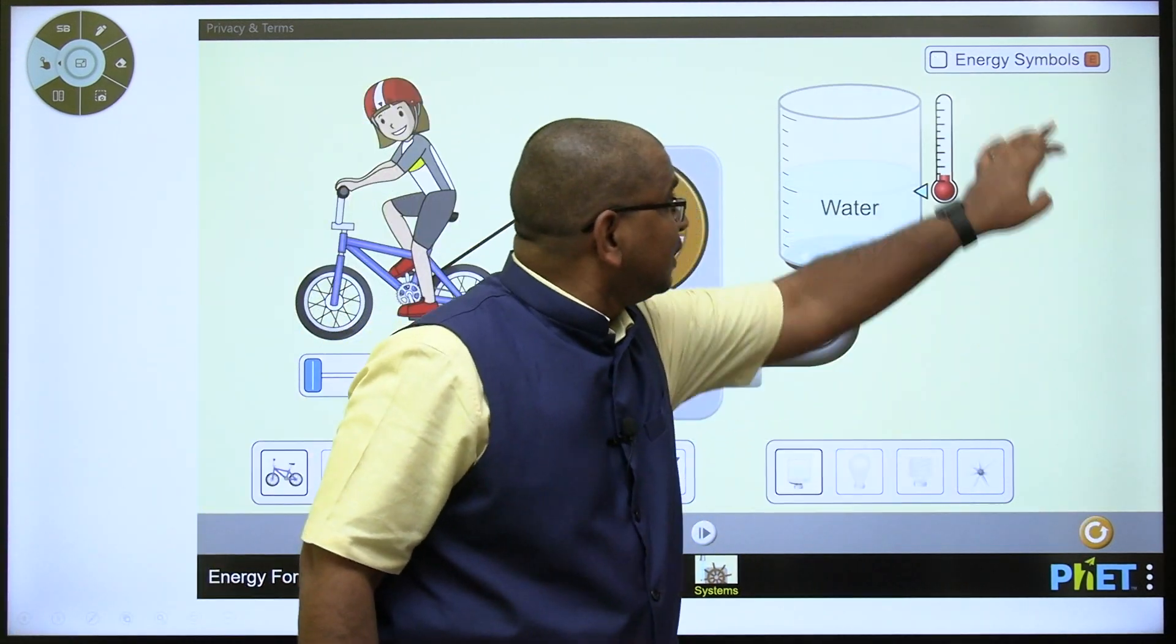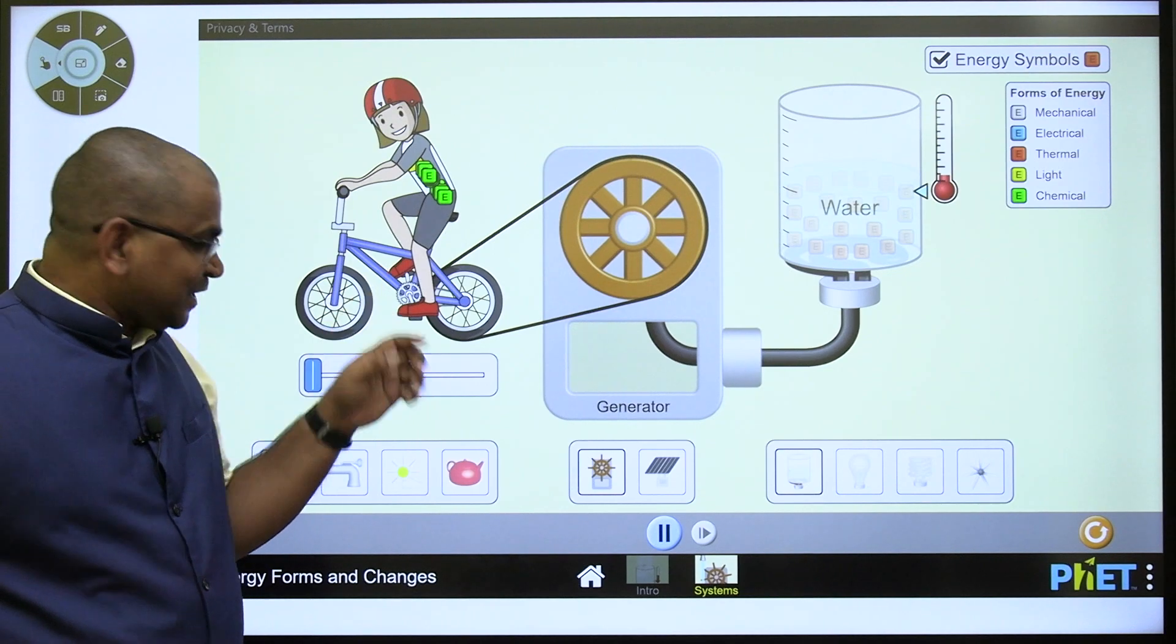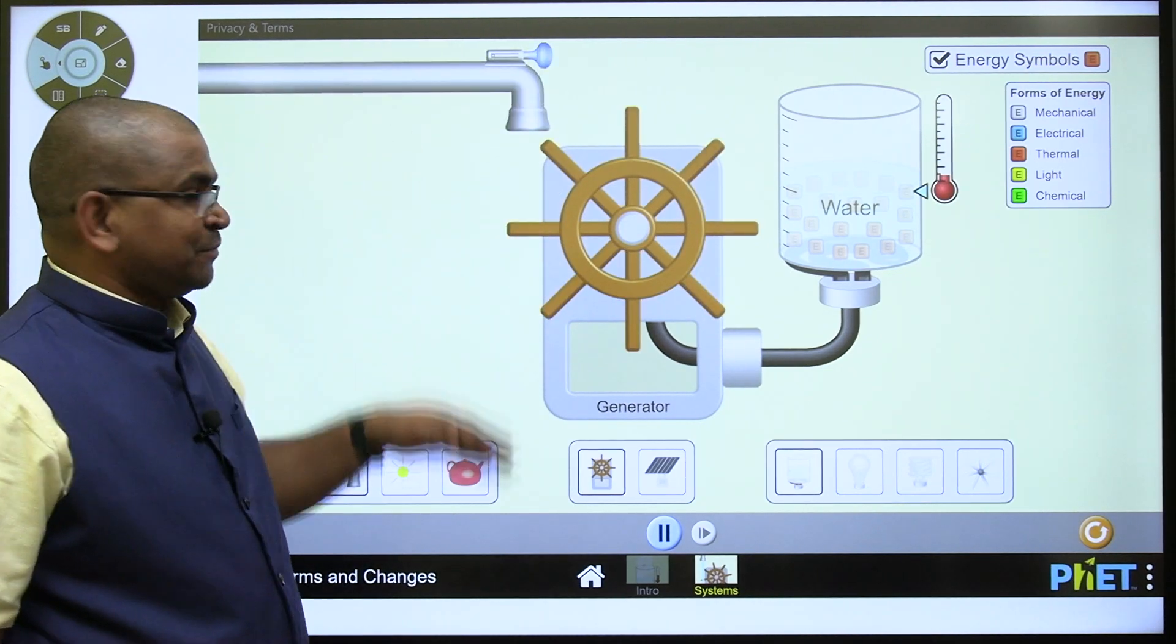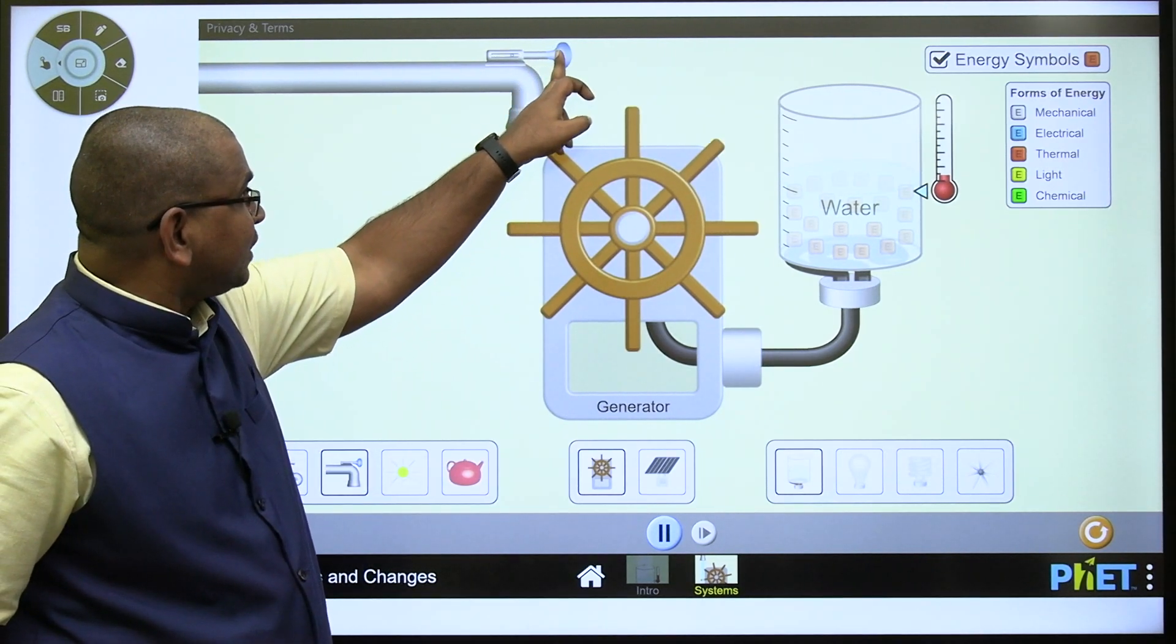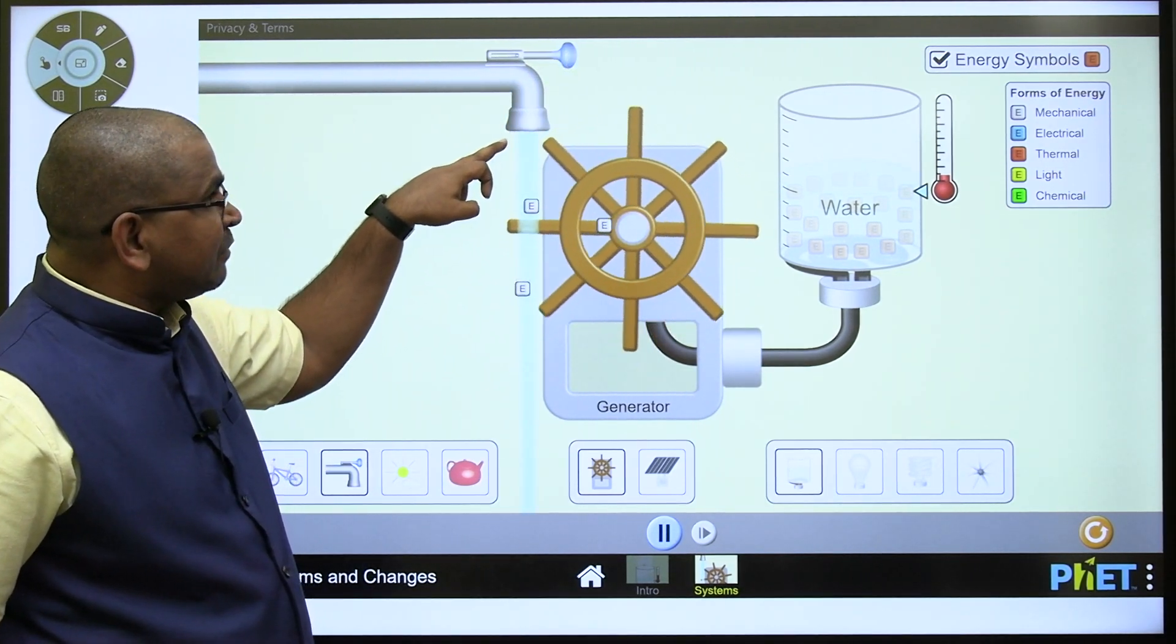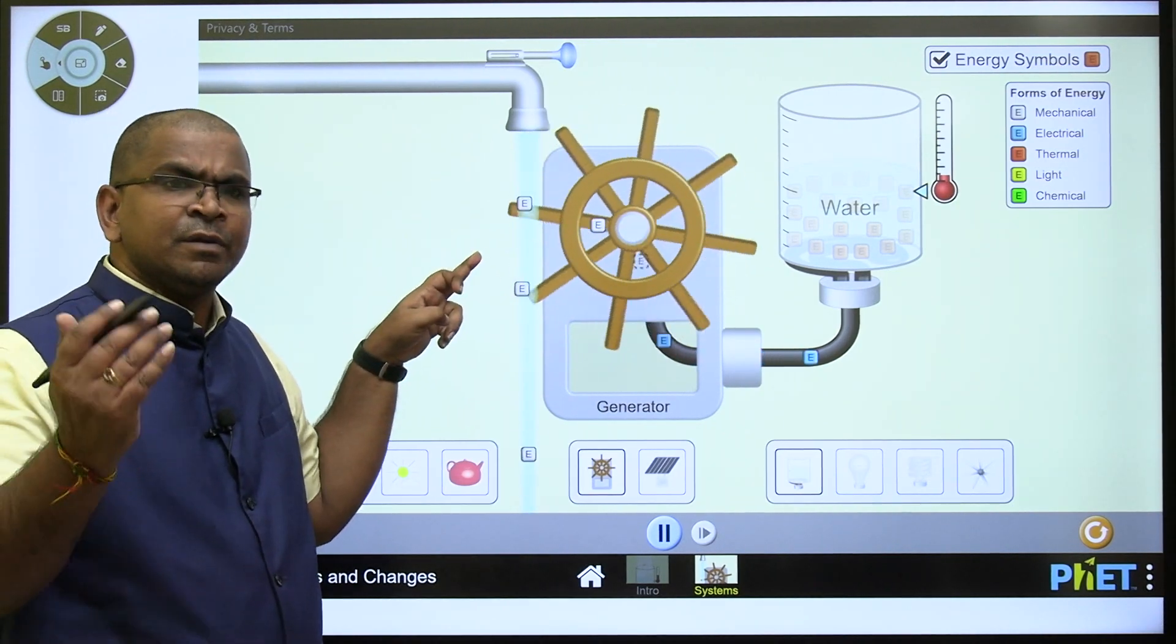If you want me to reset the things again, and energy labels are available, instead of pedaling, if I take a water system. Now observe clearly here, I am just opening the water. And what energy is available here? Initially, this is mechanical energy. That kinetic energy is nothing but mechanical energy.